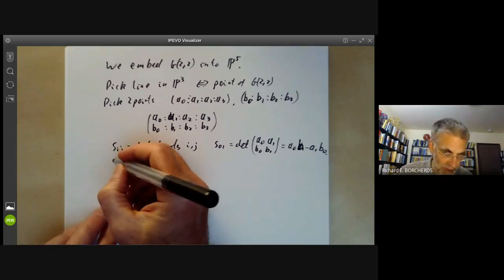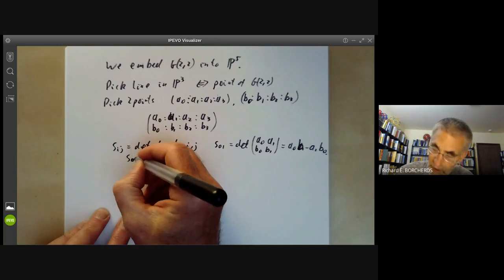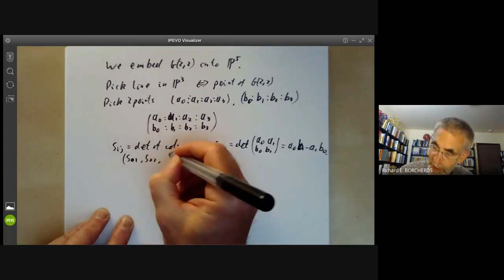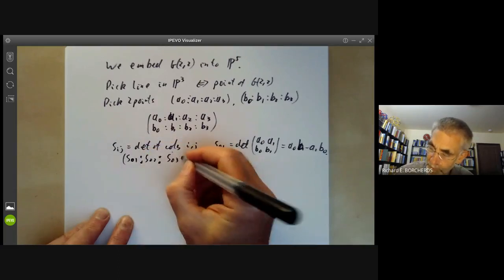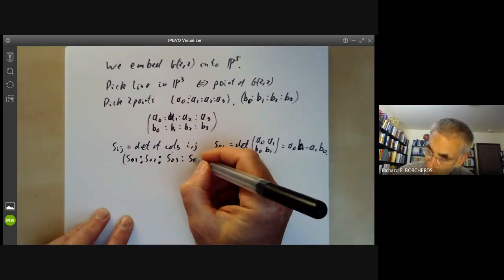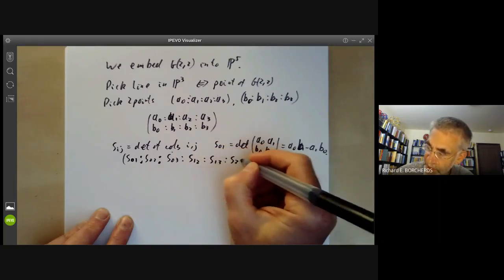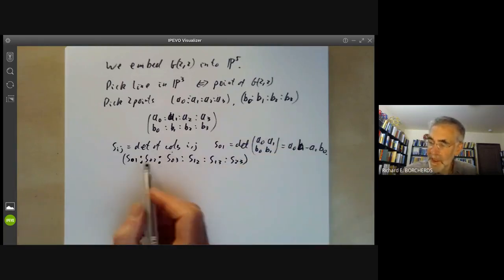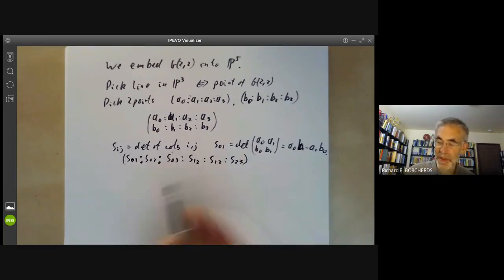So altogether we get six coordinates: S0,1, S0,2, S0,3, S1,2, S1,3, S2,3. Of course something like S3,0 is going to be the same as S0,3 up to sign so there's no point in putting it in and something like S1,1 is automatically going to be zero so we can miss out those as well.